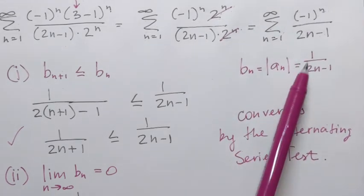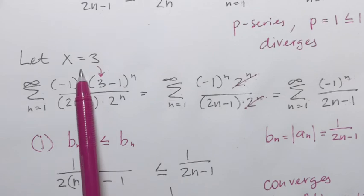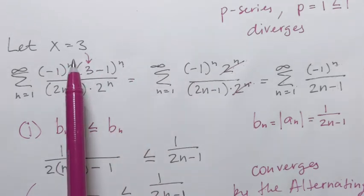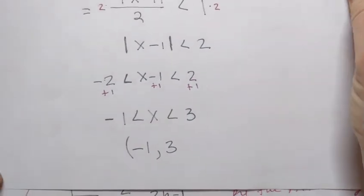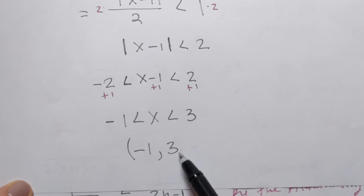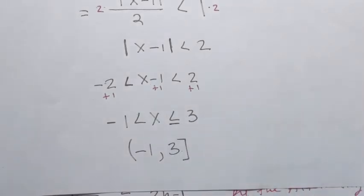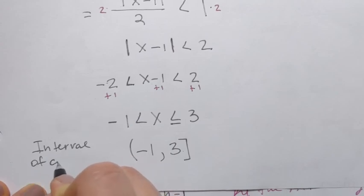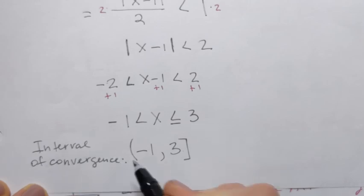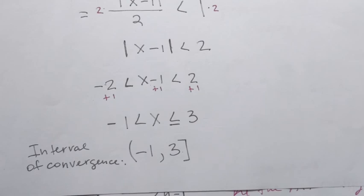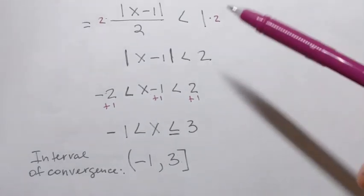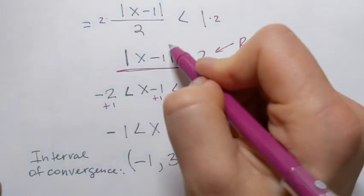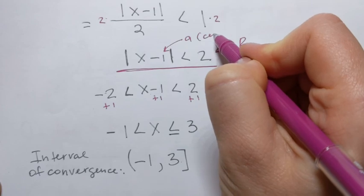Since the series converges when x equals 3, the right endpoint is included in the interval of convergence. So we use a bracket at 3. The interval of convergence is from negative 1 to 3, not including negative 1 but including 3. Additionally, the radius of convergence is 2 and the center is 1.